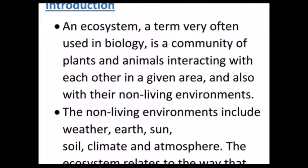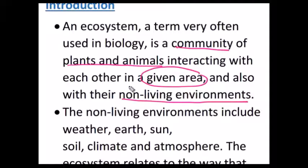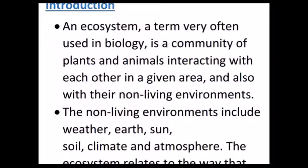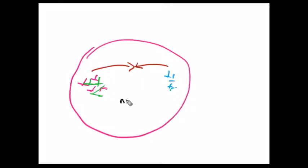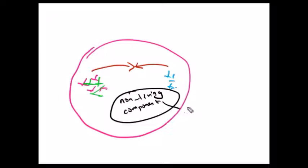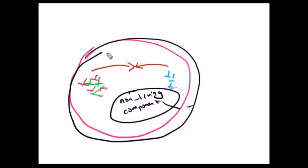First of all, you should know the definition of ecosystem. We can define ecosystem as a community of plants and animals interacting with each other in a given area and also along with the non-living environment. Take an area — there are some plants and some animals in the region. They interact with each other and also interact with the non-living components of the environment like air, water, land, and other things. Collectively, this system is called ecosystem.